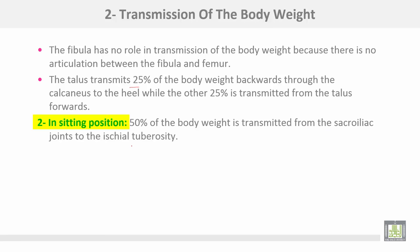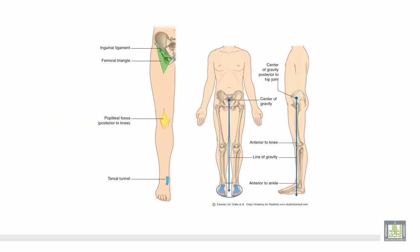In the sitting position, 50% of body weight is transmitted from the sacroiliac joint to the ischial tuberosity. Body weight is transmitted from the vertebral column to the sacrum, then 50% on each side, 50% also to the lower end of the femur, to the tibia, to the talus, then 25% forwards and another 25% backwards.